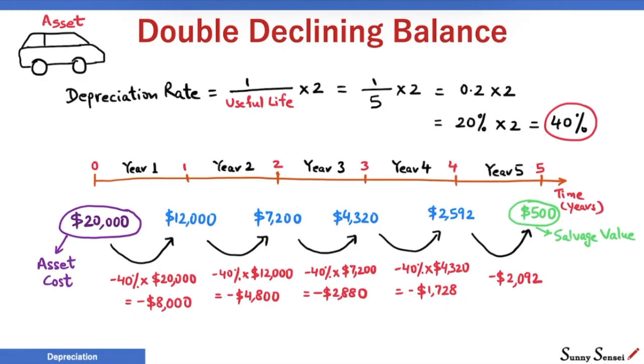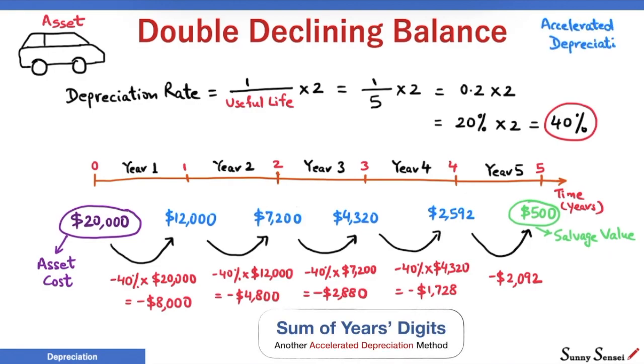Finally, double declining balance method belongs to a special category of depreciation techniques called accelerated depreciation. In double declining balance method, the annual depreciation is much more in the initial years. It decreases with time. This is evident in our example. Depreciation is $8,000 in year 1 but drops to $4,800 in year 2. It keeps decreasing across the lifetime of the asset. We are ignoring the last year adjustment for the salvage value. These characteristics are unique to accelerated depreciation. This is unlike straight-line depreciation where the annual depreciation is constant across the useful life of the asset.